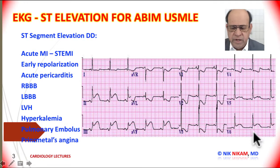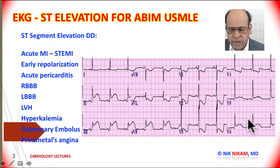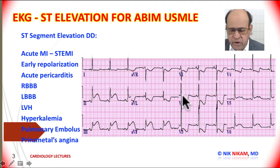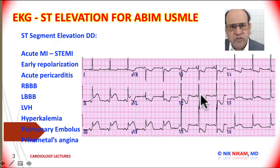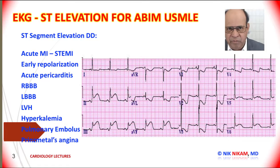Along with that we also have tall R waves in this electrocardiogram with ST segment depression, which represents the reciprocal ST depression related to the inferolateral myocardial infarction. We could also argue that the presence of tall R waves may make us think about the possibility of posterior involvement as well. That is besides the point, but worth noting since we are treating the whole patient. Let's move to the next tracing.